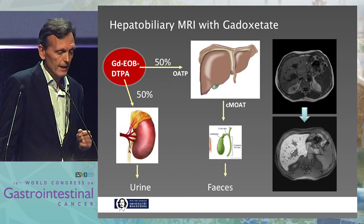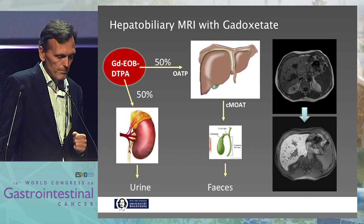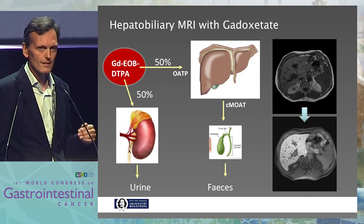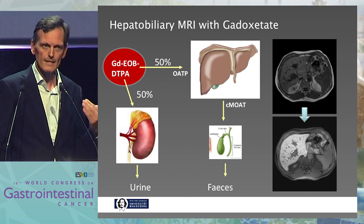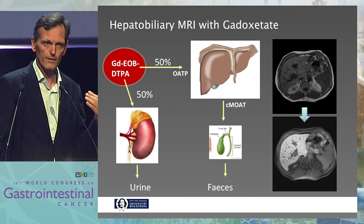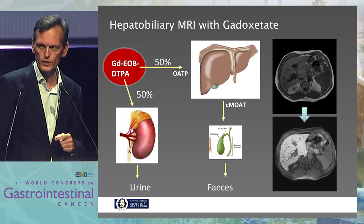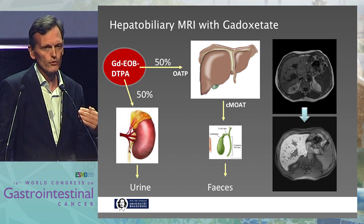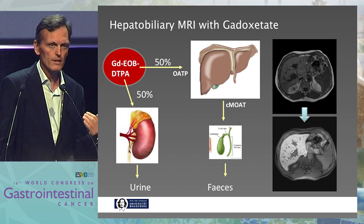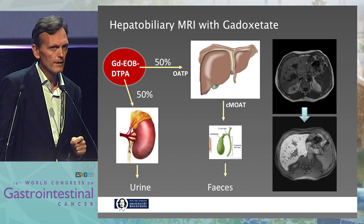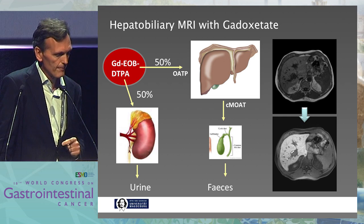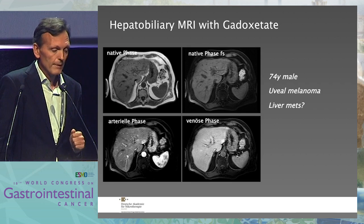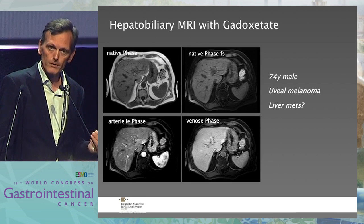The key word here is OATP as the transporter mechanism, which needs to be expressed in the liver hepatocytes to allow for the uptake of gadozetate. The plain image is on top and the late-phase hepatobiliary image is below. You can see that the liver is bright — that is what happens when the gadozetate is taken up by functional hepatocytes. Dysfunctional hepatocytes or non-hepatocyte tissue in the liver will not take up the contrast agent. This is a 74-year-old male with uveal melanoma, question of liver metastases.